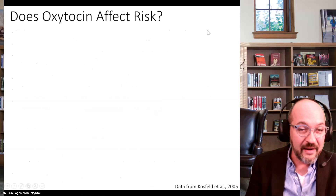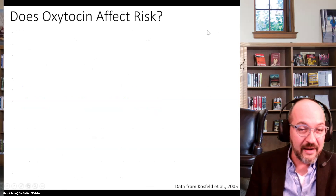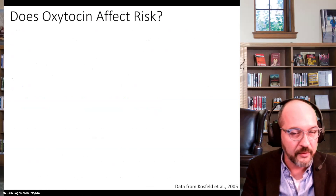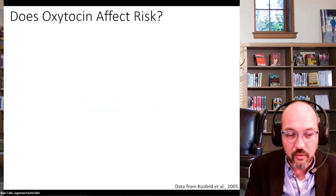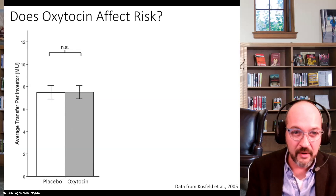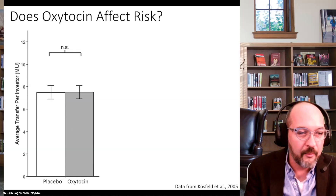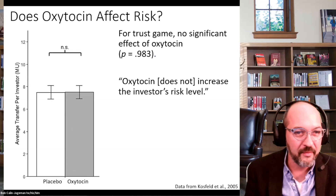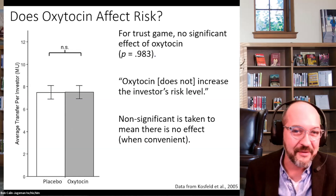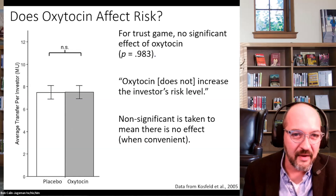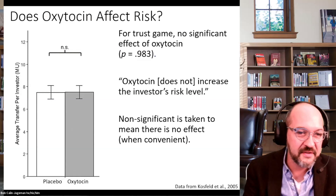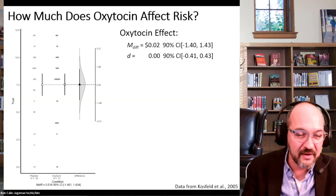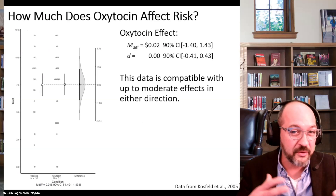Another example of bad inference: the original researchers also asked whether the oxytocin effect on trust was specific. They did the same experiment with an additional group playing a risk game — the same investment game but played with a computer, involving risk rather than trust. There was no statistically significant difference, which became the claim that 'oxytocin does not increase risk level.' That's embracing the null — the fallacy of endorsing the null, taking a non-significant finding as meaning no effect. In estimation terms, the confidence interval was consistent with a wide range of effect sizes; this was not enough data to show a negligible effect.